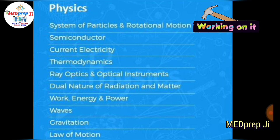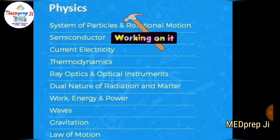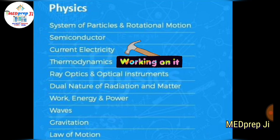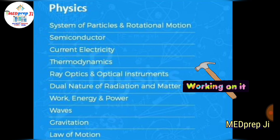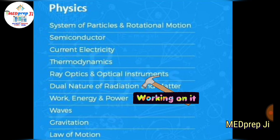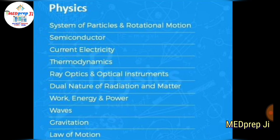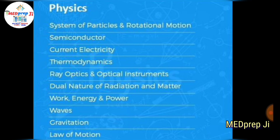In Physics: rank one goes to System of Particles and Rotational Motion — it is a little bit tough but a very important topic; rank two goes to Semiconductors, a very easy topic; rank three goes to Current Electricity; rank four goes to Thermodynamics; rank five goes to Ray Optics and Optical Instruments, a very important topic; rank seven goes to Dual Nature of Radiation and Matter; rank eight goes to Work, Energy and Power; rank nine goes to Waves; and rank ten goes to Gravitation and Laws of Motion.